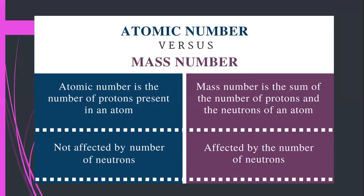We can compare atomic number versus mass number. The atomic number is the number of protons present in an atom, whereas the mass number is the sum of the number of protons and neutrons of an atom. The atomic number is not affected by the number of neutrons, whereas the mass number is affected by the number of neutrons.